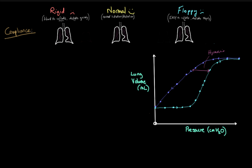Compliance is how distensible the lung is — that's the term used in all the books. Distensible means its ability to be deformed: how easily can it be deformed from its resting state to a changed state, which in this case is going to be one of increased lung volume.